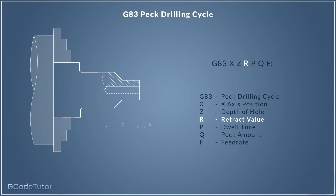R is our retract value — this is a new feature on this cycle. The retract value is from the datum of the face. So if we had a retract value of one millimeter, the drill would retract one millimeter from the end face of the component and then go back in and start drilling again. This cycle also allows us to add a dwell time, similar to the G82 spot drilling cycle. The P value is in milliseconds, so a P value of 500 would be half a second. Bear in mind, the P dwell value is always in milliseconds.